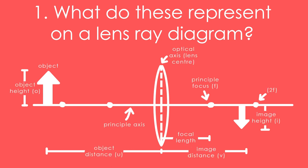Starting on the left, we have the object and we have its height. Quite often, you'll just see the object as an arrow. The distance from it to the lens is the object distance, and the line that we take measurements from is the principal axis.